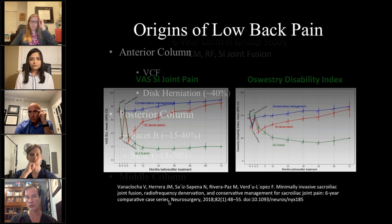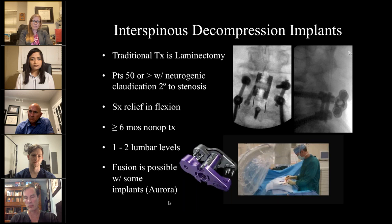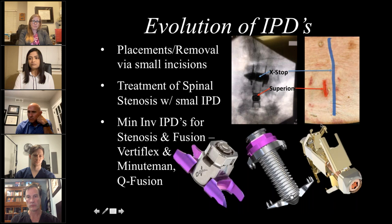Finally, we'll discuss the middle column: stenosis and new implants for stenosis. This includes fusion implants like the Aurora Zip and stable-length devices, as well as non-fusion implants such as Vertiflex Superion — appropriate for one or two levels in patients with six months or more of neurogenic intermittent claudication. There are also lateral-based implants. The difference with these is that the X-Stop is a non-fusion implant requiring about a seven or eight centimeter incision.